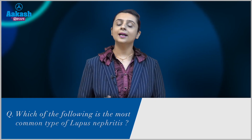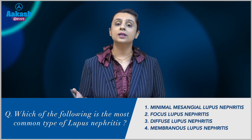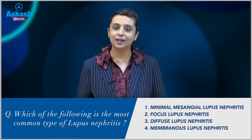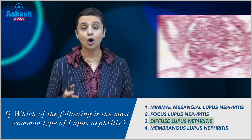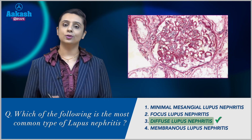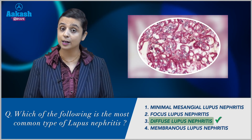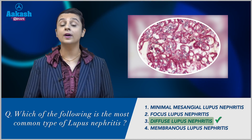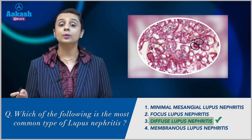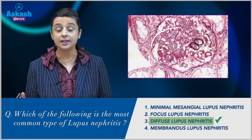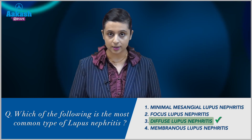A commonly asked question: which is the most common type of lupus nephritis? The answer is Class 4, diffuse lupus nephritis, characterized by the presence of wire loop lesions, which occur due to large sub-endothelial deposits.